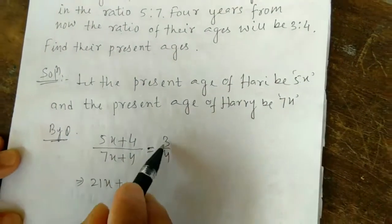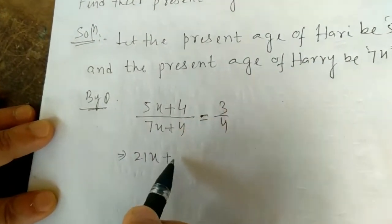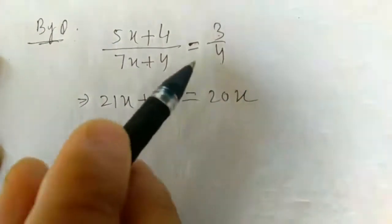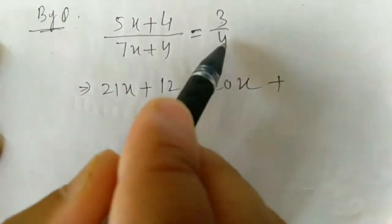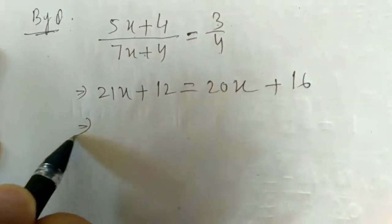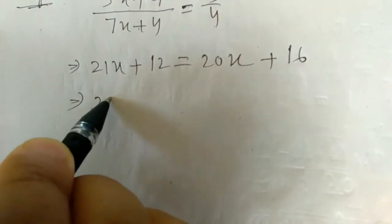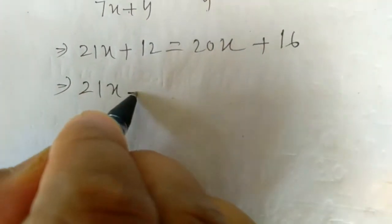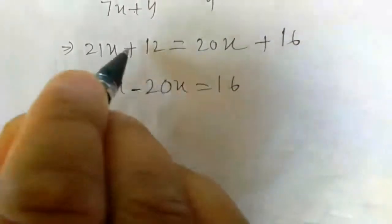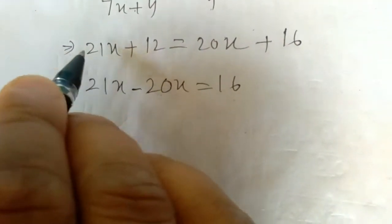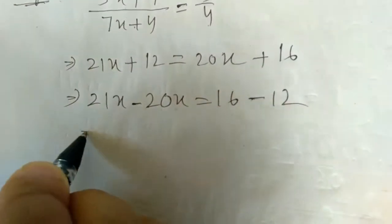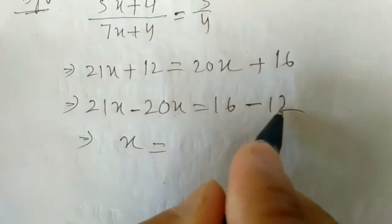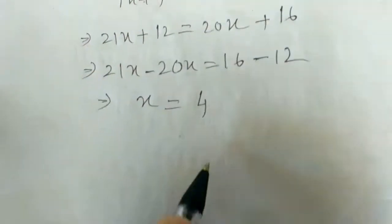Now cross multiply: 3 × (7x + 4) = 4 × (5x + 4), giving 21x + 12 = 20x + 16. Bring x terms to the left and constants to the right: 21x − 20x = 16 − 12, so 1x = 4. Therefore x = 4.